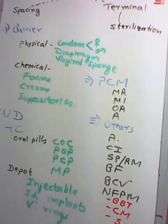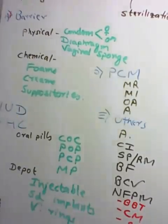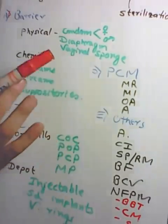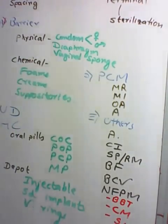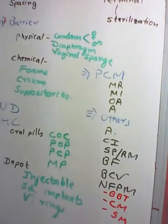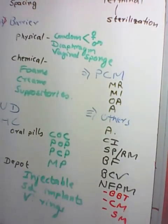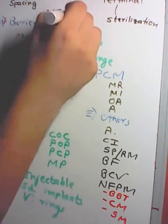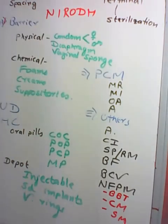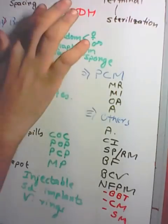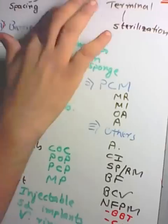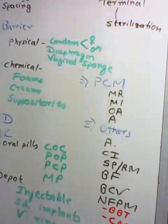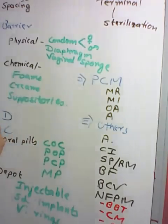The first barrier method is condoms, which can be male or female. The popular type supplied by the Government of India is NIRODH (N-I-R-O-D-H). Condoms will not only prevent pregnancy but will also prevent sexually transmitted infections.